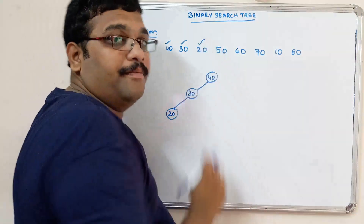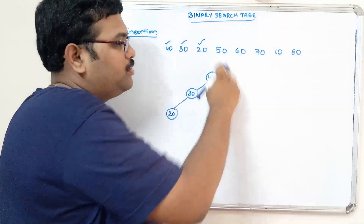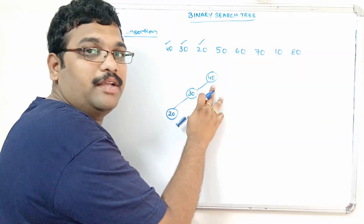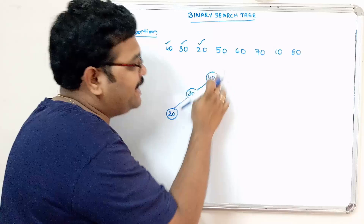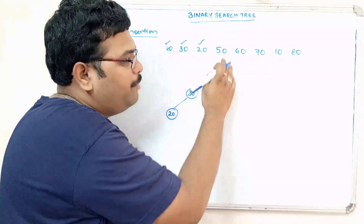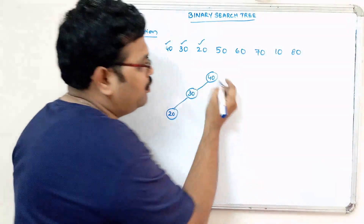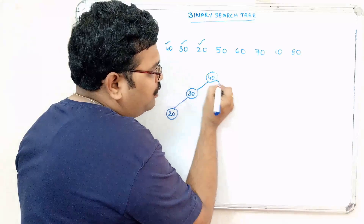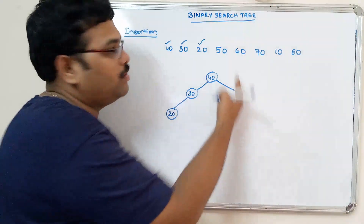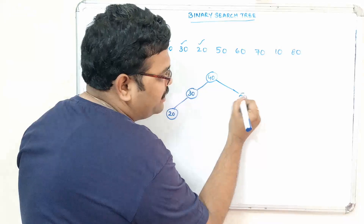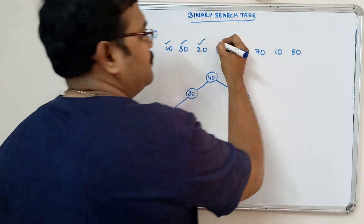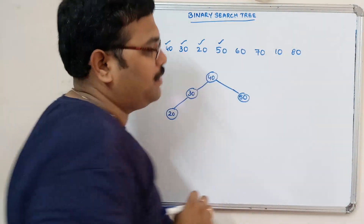Coming to 50. The tree is not empty. 50 is compared with 40. 50 is greater than 40, so the position of 50 will be on the right side of the root node. The right subtree of the root node is empty, so consider 50 as the root node of the right subtree and insert it.